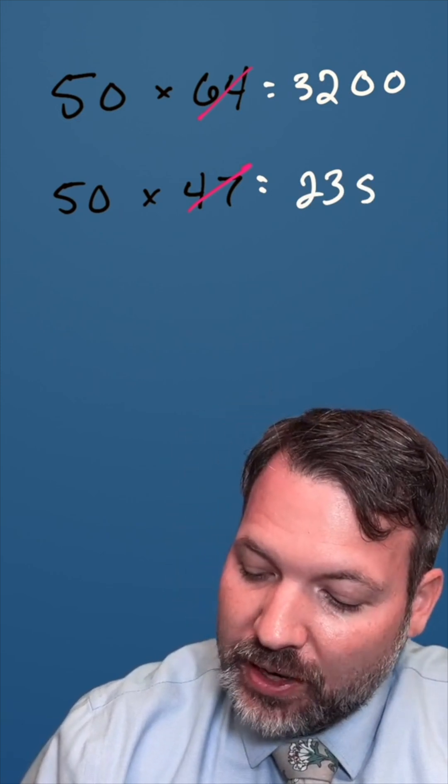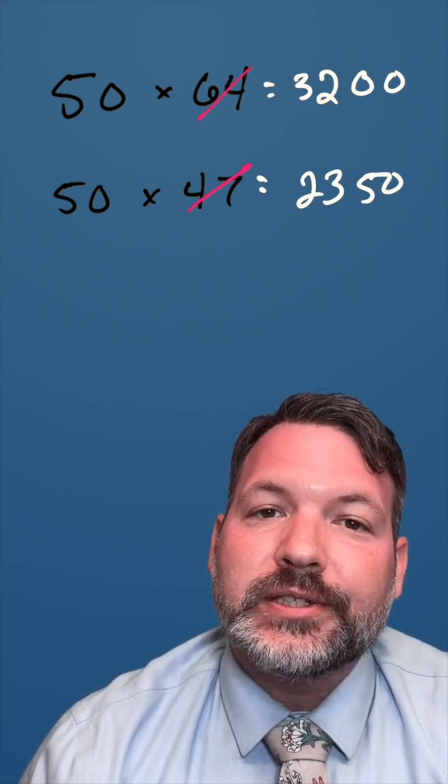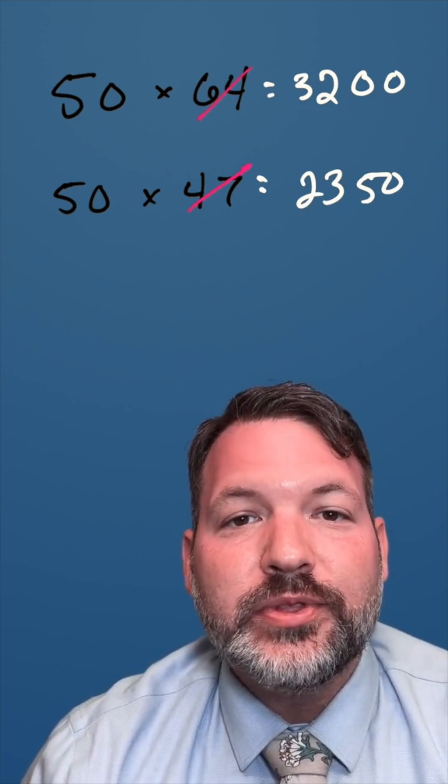Because it does have a remainder, instead of writing two zeros, we write 50, and there's our answer. 50 times 47 is 2,350.